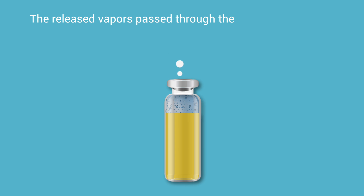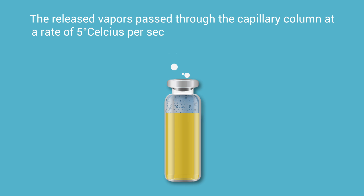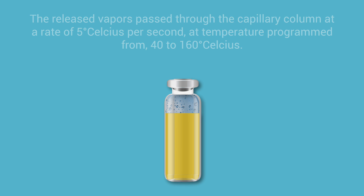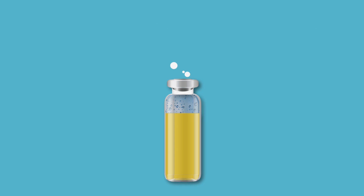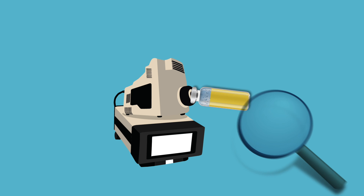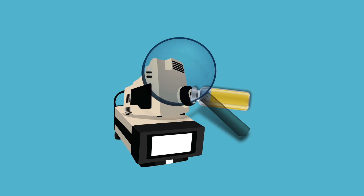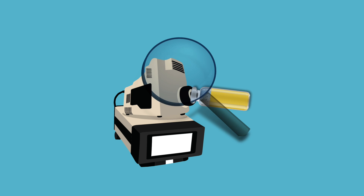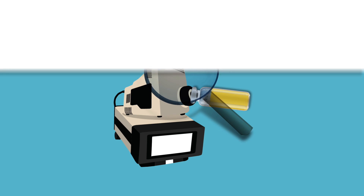The released vapors passed through the capillary column at a rate of 5 degrees Celsius per second, at a temperature programmed from 40 to 160 degrees Celsius. As they exited the column, the vapors were detected and quantified by a solid state detector.